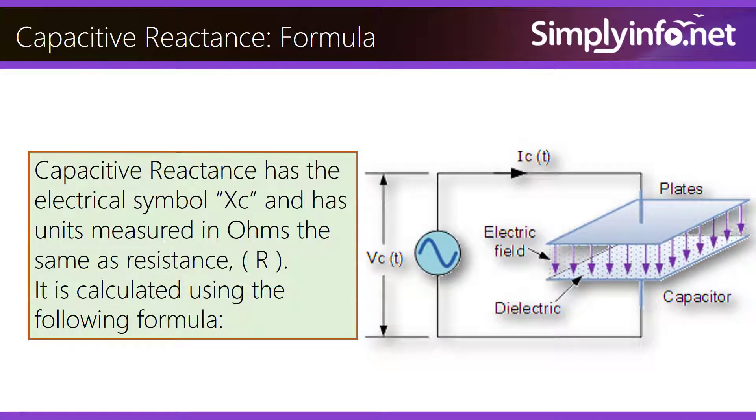Capacitive Reactance has the electrical symbol Xc and has units measured in ohms, the same as resistance. It is calculated using the following formula.